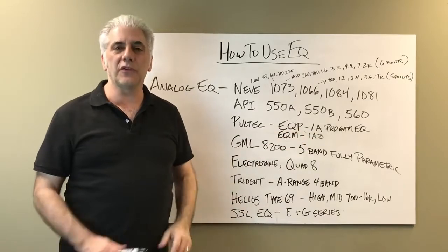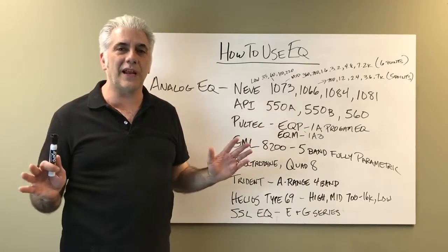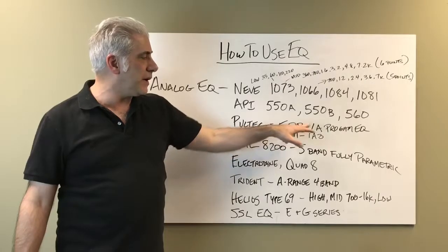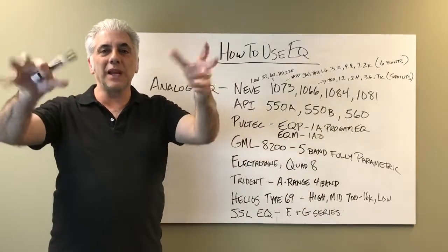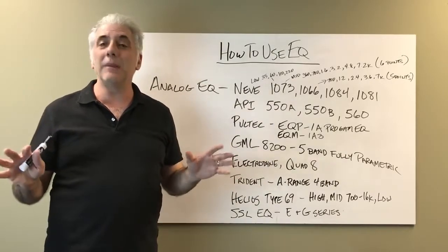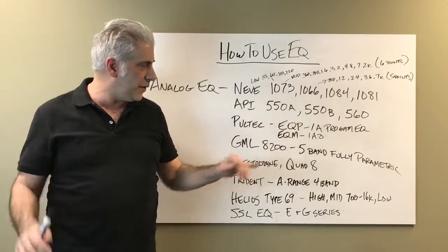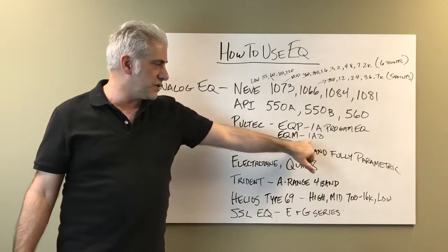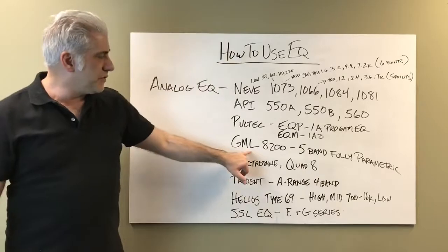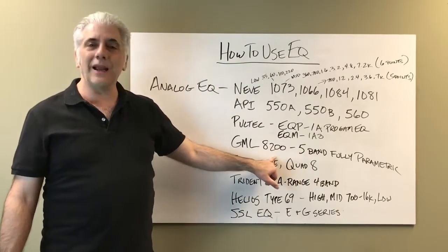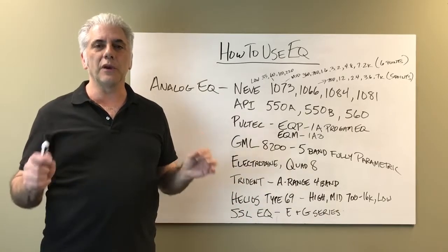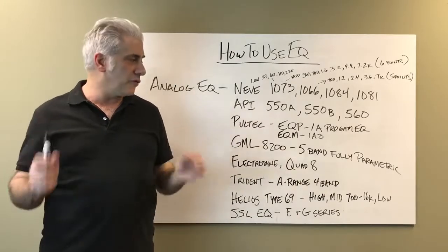The Pultec EQ comes in basically two types — tube or solid state — and they're super expensive. You've got the EQP-1 program EQ, which you've seen with the big boost and attenuation knobs. They're phenomenally good sounding; they're actually remaking them now in solid state or tube. Then there's the mid-range version called the EQM, or 183. The GML 8200 by George Massenburg is a five-band, fully parametric EQ you'll see in studios and mastering rooms — very surgical, great sounding analog EQ.